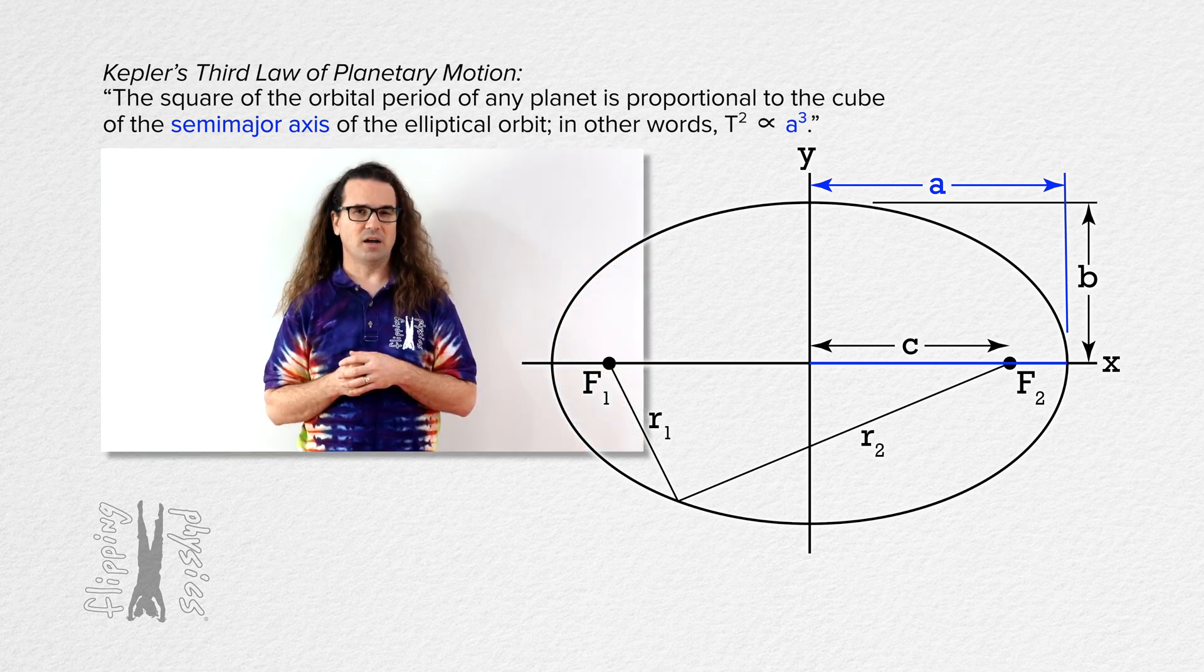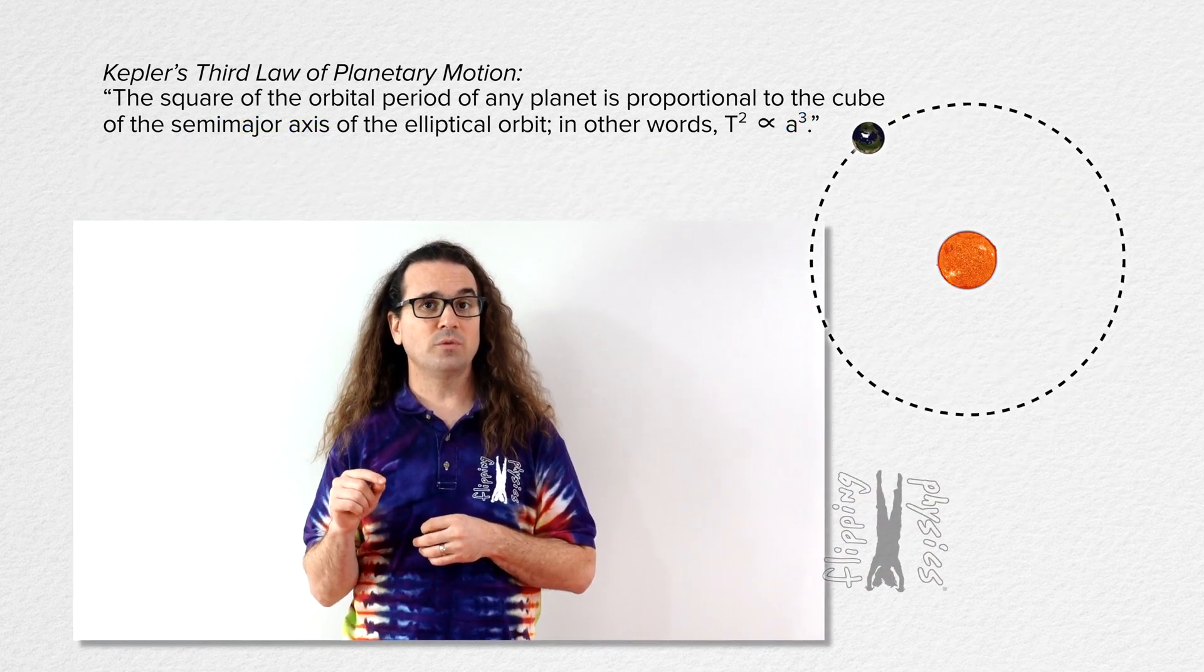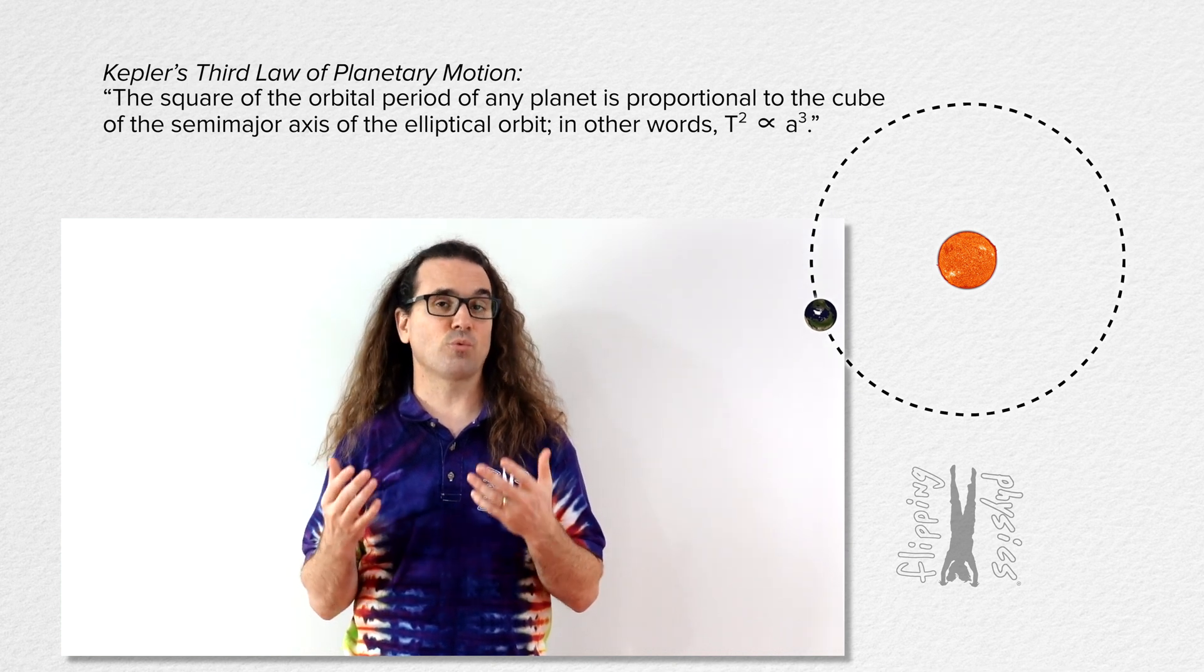To prove Kepler's Third Law, we start by assuming the planet's orbit is circular. Previously, we have shown that the orbits of all the planets are nearly circular, so this is a reasonable assumption.